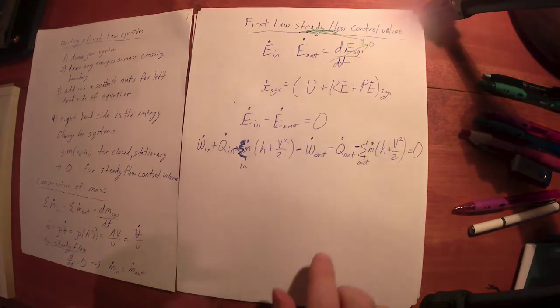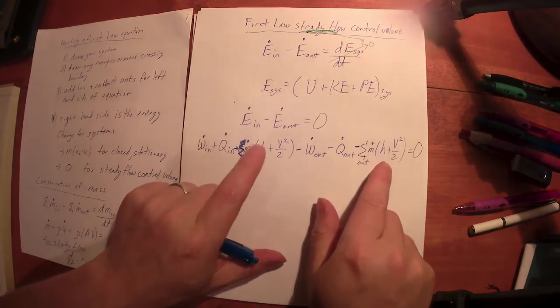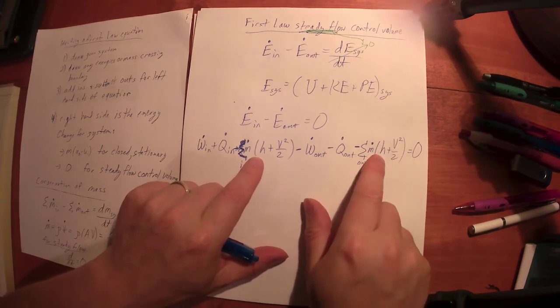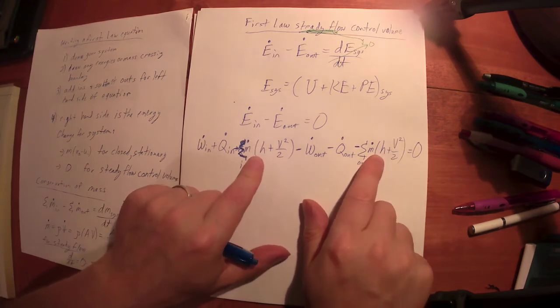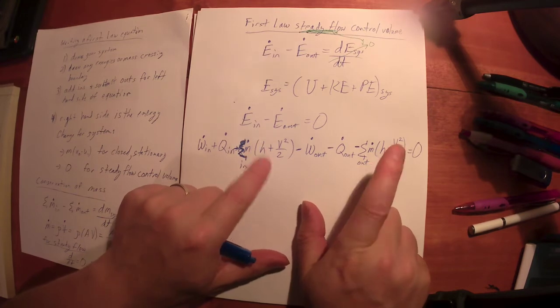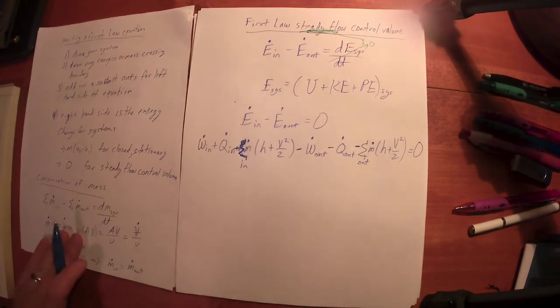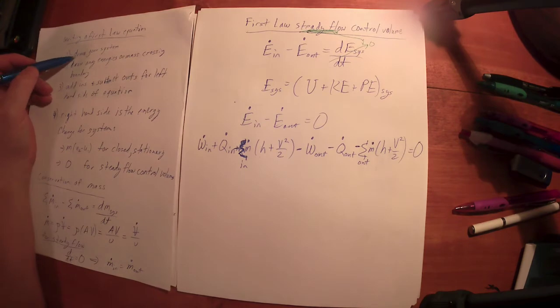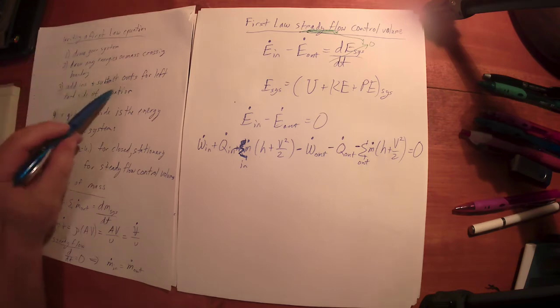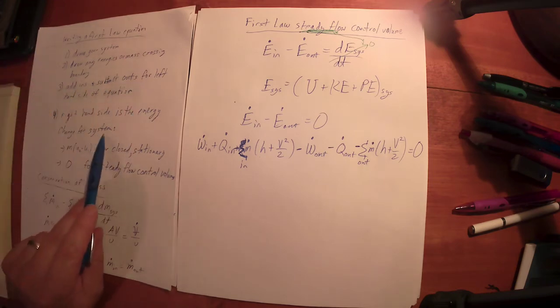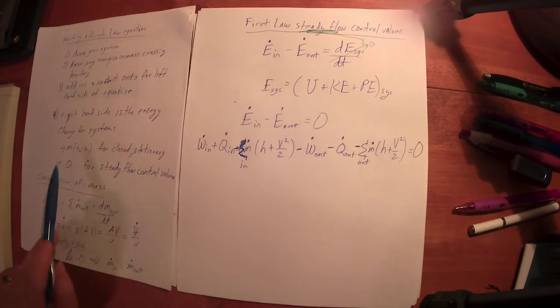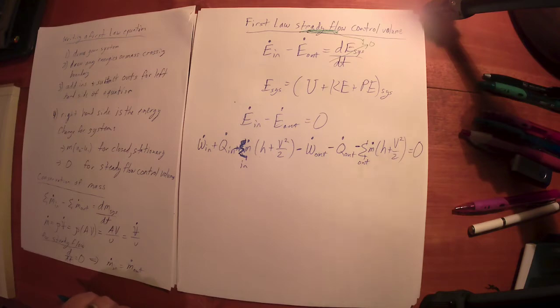It doesn't mean there's not - there is going to be a change from the energy of the mass in to the energy of the mass out. That's normally really what we're after. The procedure is the same: draw your system, draw all the energies of mass crossing the boundary, add the in, subtract the outs - that's the left hand side of the equation. The right hand side is equal to the energy change for the system. If it's a steady flow control volume, we set that equal to zero.